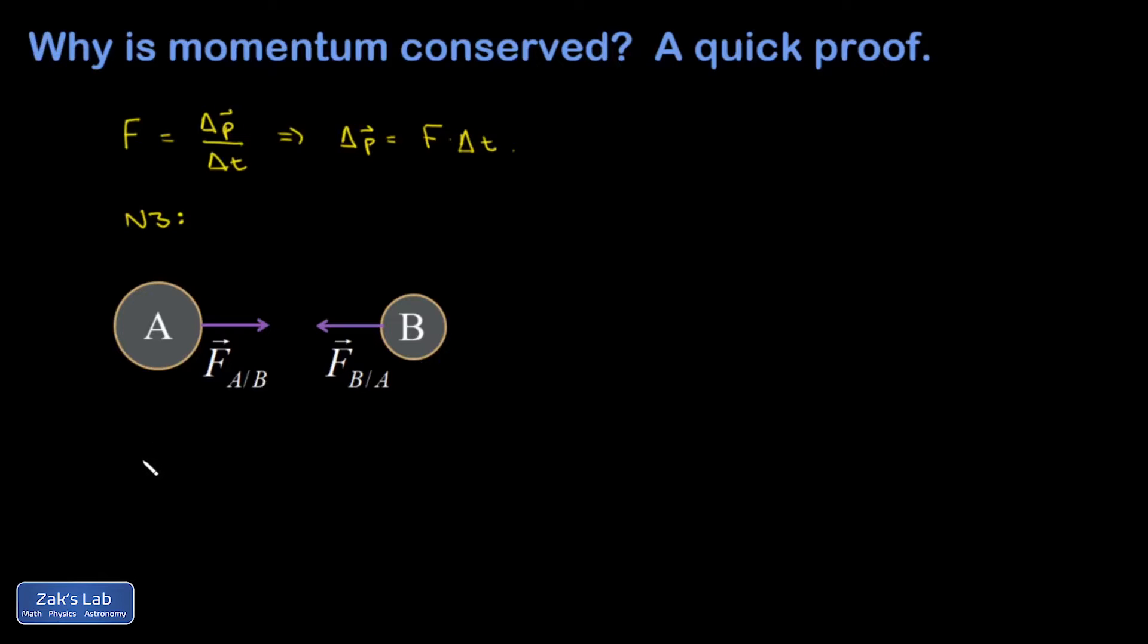So I'm going to start by expressing Newton's third law. The force on A due to B must be the vector opposite of the force on B due to A. In other words, the force with the same magnitude but opposite direction.